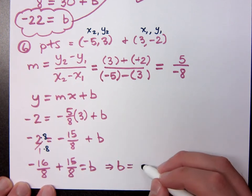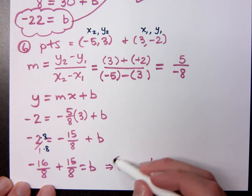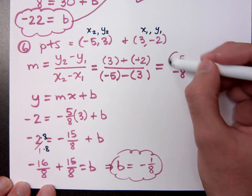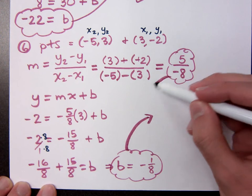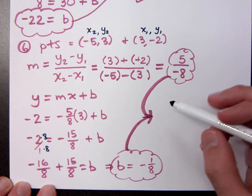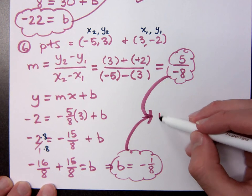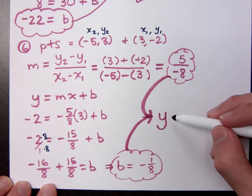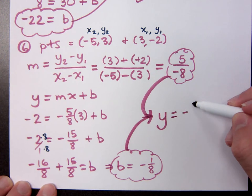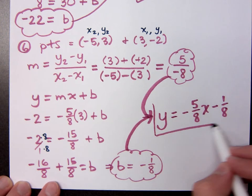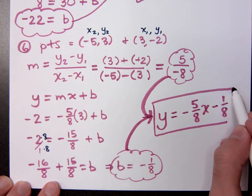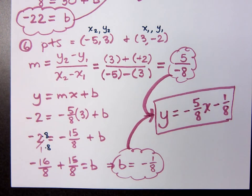Negative 1 eighth. So b is negative 1 eighth. There's my slope. So when I put these guys together, what do I get? Y equals what? Negative 5 eighths x minus 1 over 8. Questions about that?